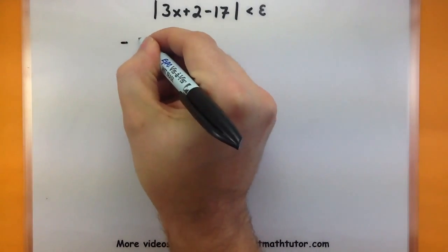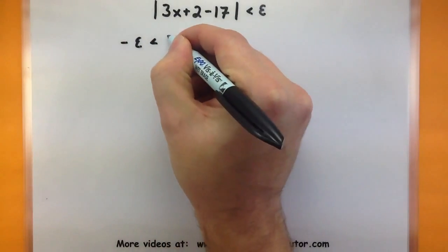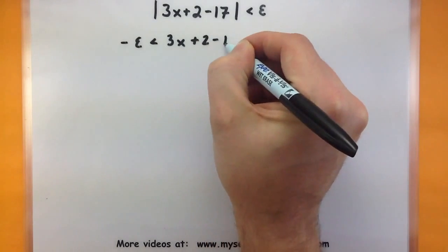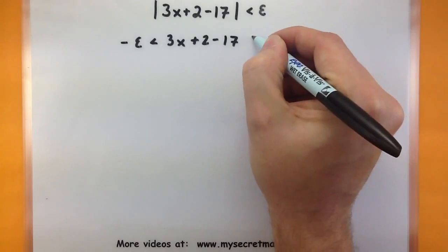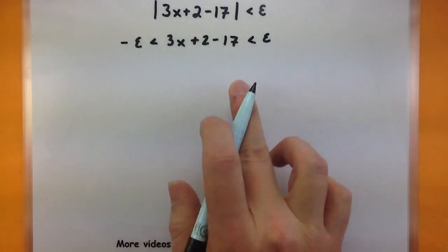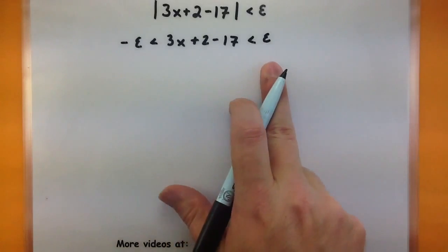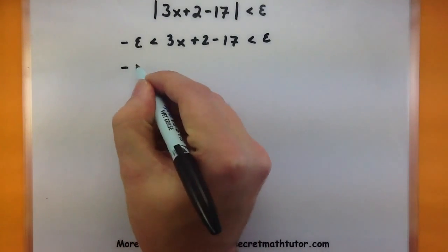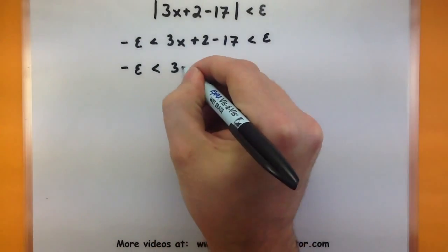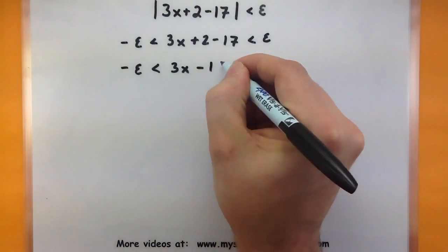And you basically want to start working with this and solve for x. So the first thing I'm doing is just breaking down these absolute values. So now I know that this inside part is between negative epsilon and epsilon. I can do a little bit of simplifying since I have a plus 2 and a minus 17. That'd give me a minus 15.